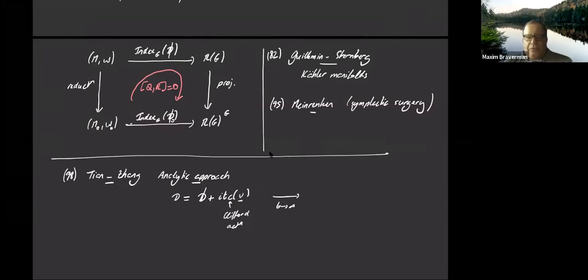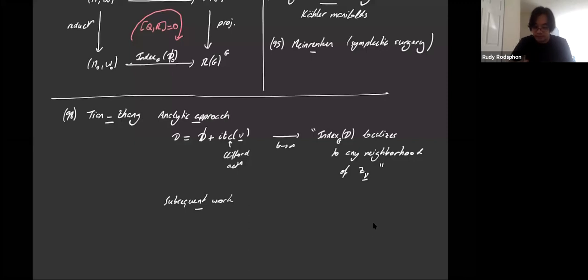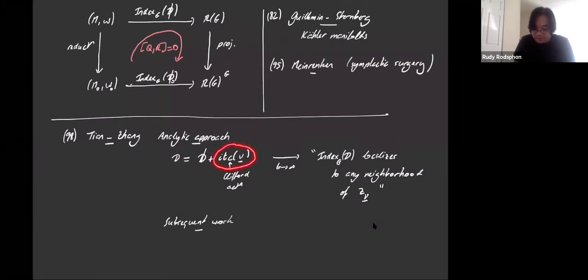So the goal of this deformation is to localize the index to any neighborhood of the zeros of this vector field, in the spirit of the Poincaré-Hopf theorem basically. So you have a localization phenomenon here by adding this potential.